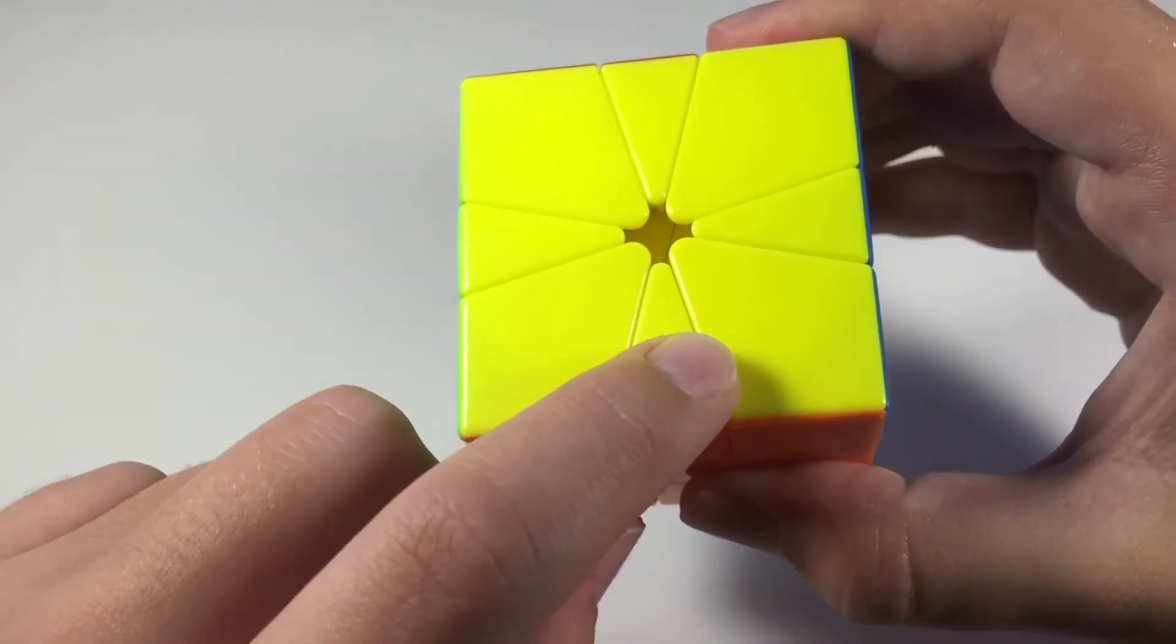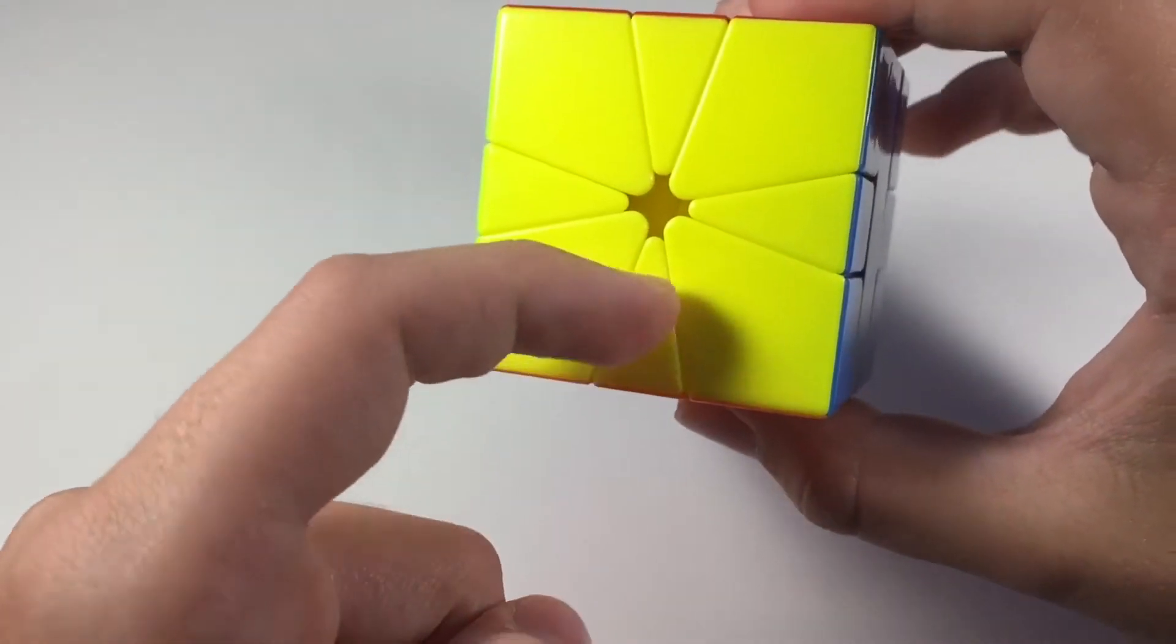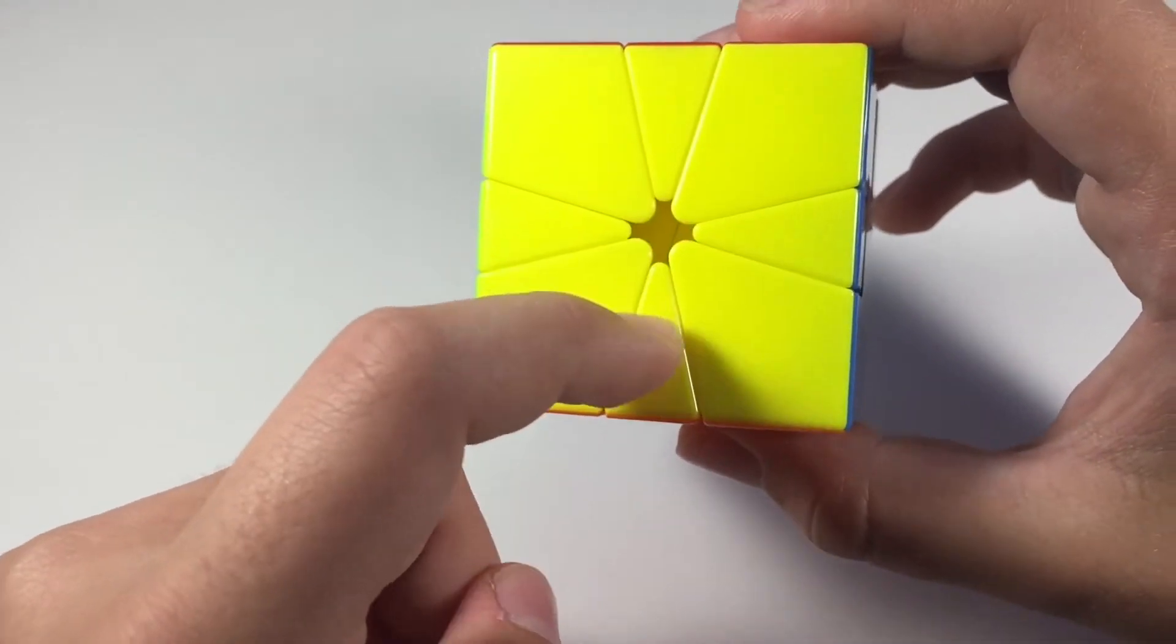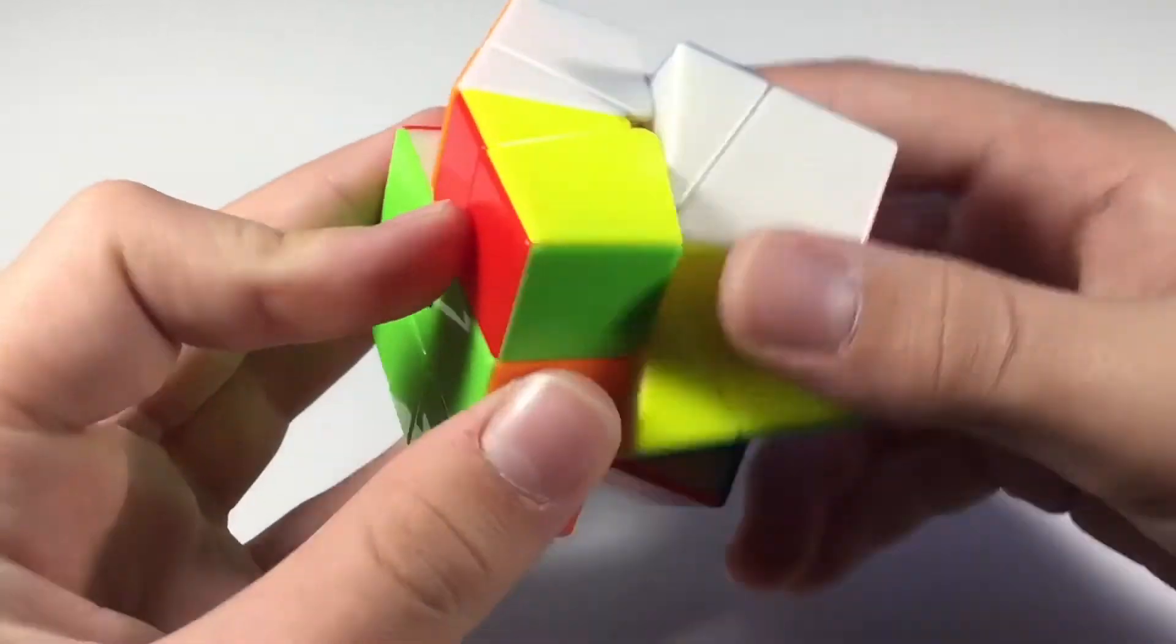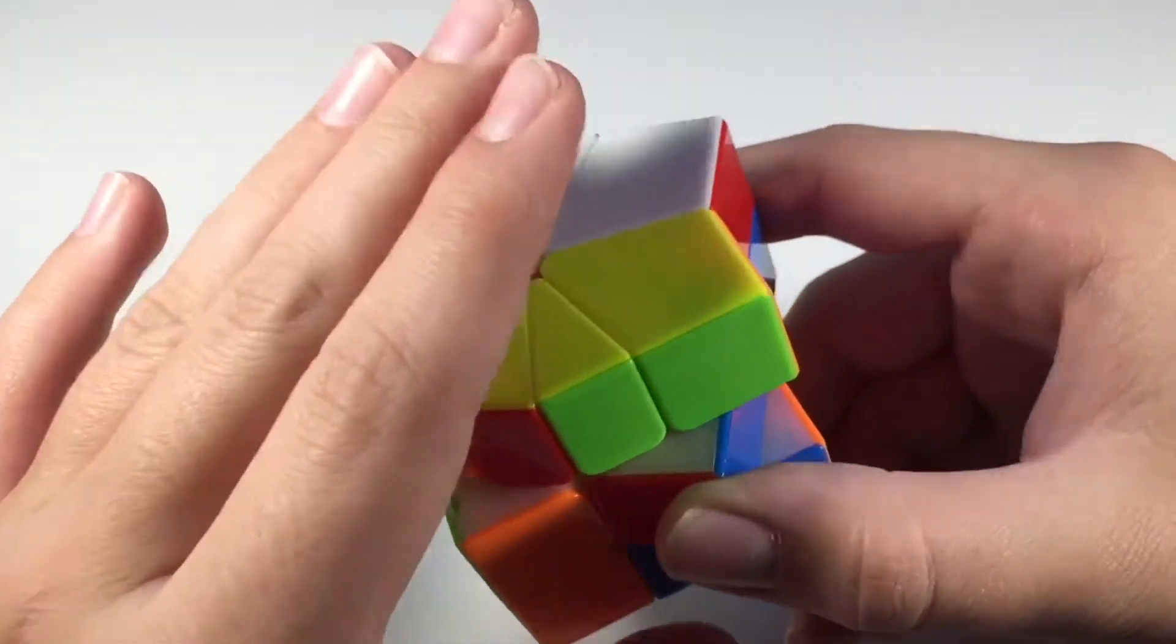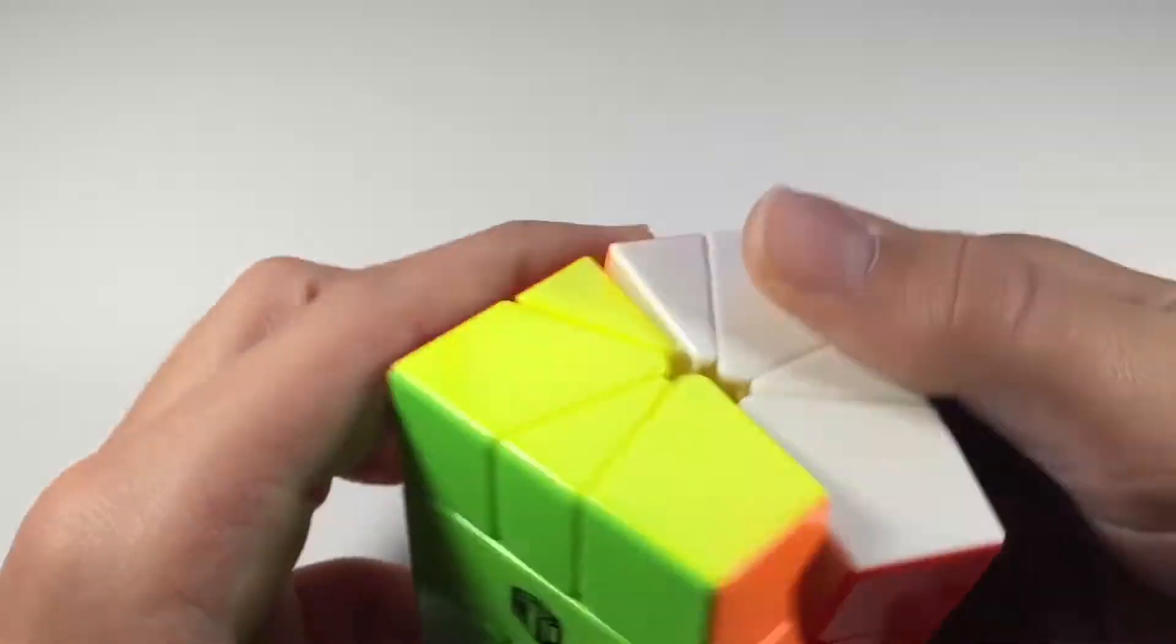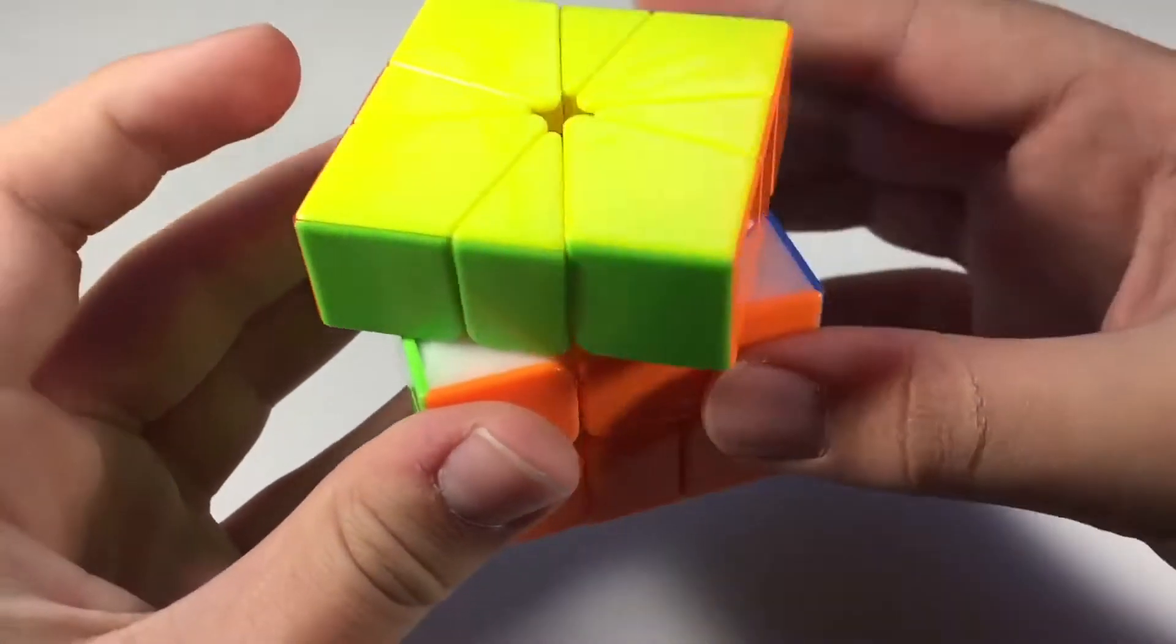Each edge is worth one number, and each corner is worth two, because a corner is twice as wide in angle as an edge. This way, no matter how much the puzzle shape shifts, the top and bottom layers will each add up to 12, and this makes the algorithms easy to write.